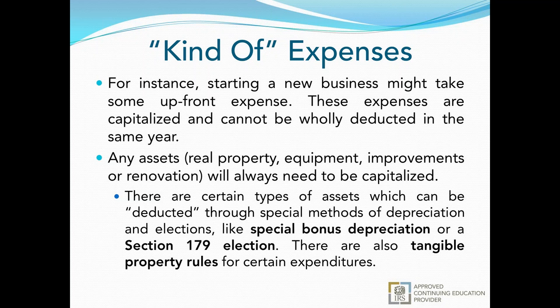Your assets — real property, equipment, improvements and renovations — will pretty much always need to be capitalized. We'll have a separate webinar over depreciation since it's such a convoluted topic. There are certain ways to take assets and expense them out through special bonus depreciation, Section 179 elections, or tangible property rules that the IRS finalized, going into effect in 2015 and signed into law in late 2014. Most limits on depreciation, like a cap on the amount you can depreciate, are primarily hinged upon the taxpayer's AGI. The AGI impact on a Section 179 election is $250,000 a year, so most limitations won't apply to most clients.